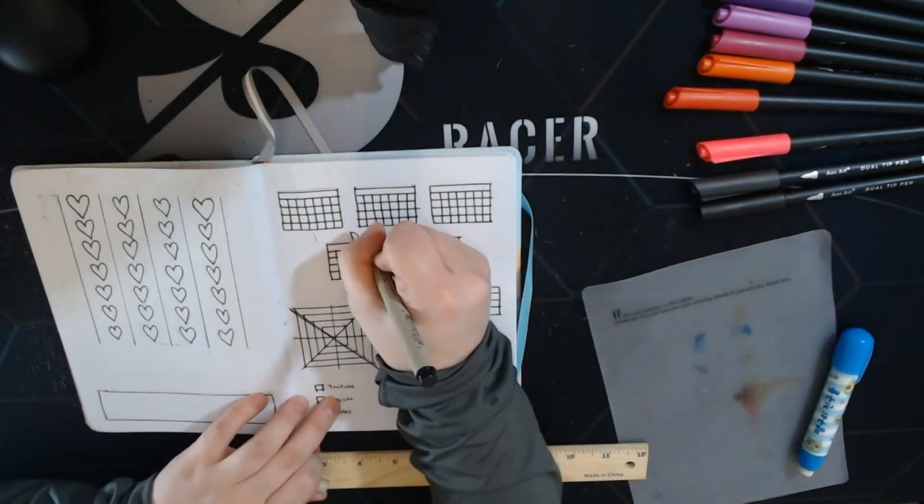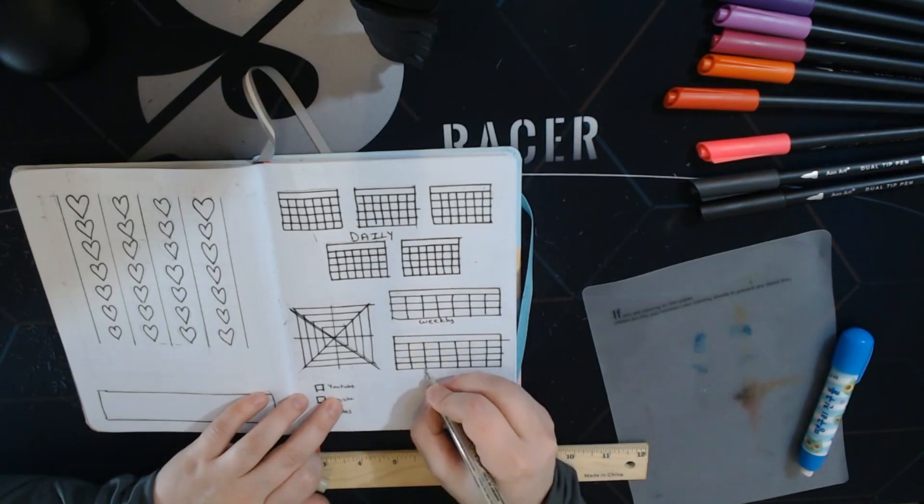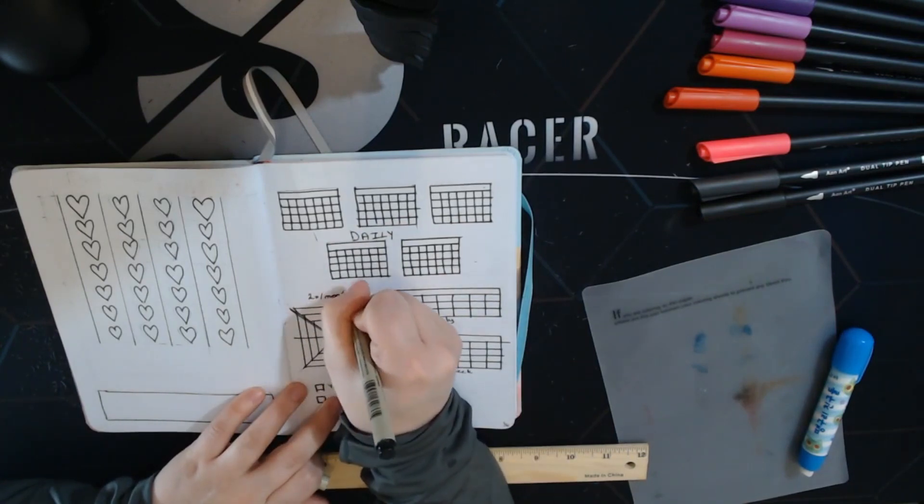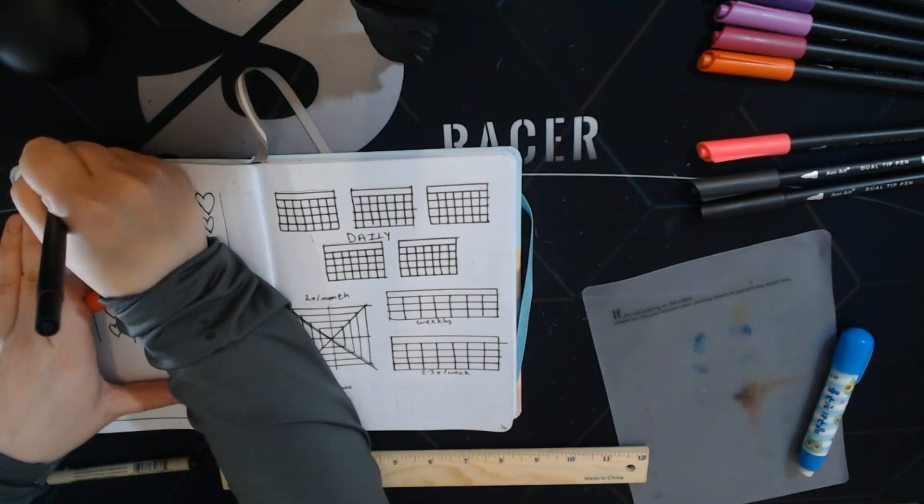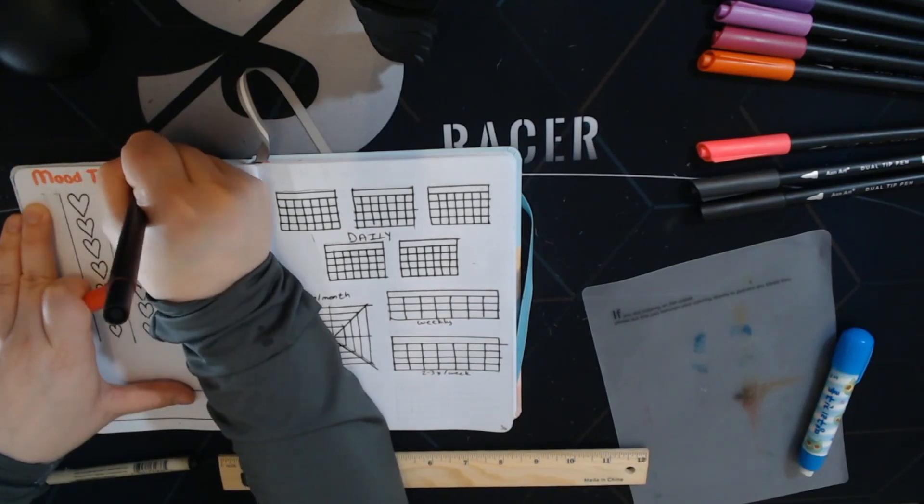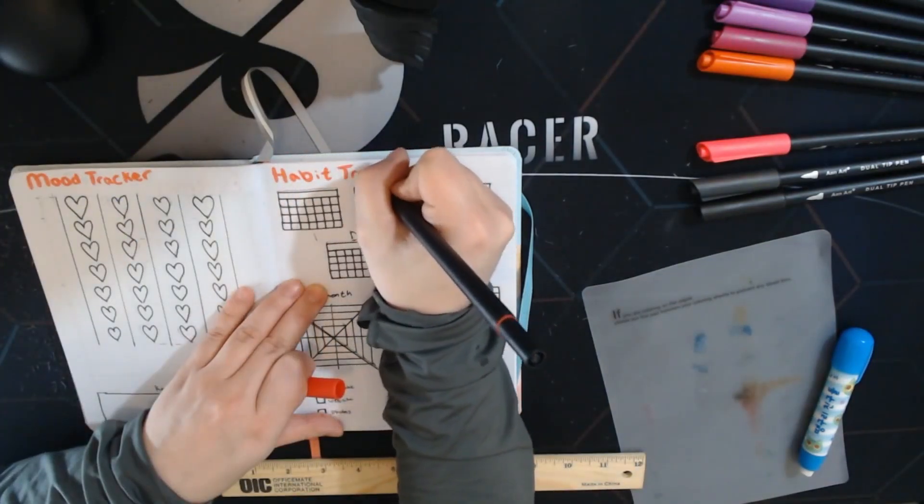And I just labeled my key for that, labeled daily, weekly, two to three times a week, and the monthly. And then made my key down there and put in my mood tracker title and habit tracker title. I can finally spell habit properly. It took me a whole year.